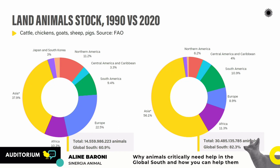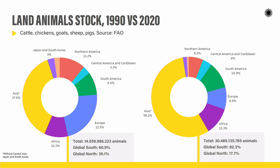Why are we discussing this today? Why is the Global South a point of concern for animal rights? This is a comparison — the source is the UN — between 1990 and 2020, showing the total number of animals: cattle, chickens, goats, sheep, and pigs. Unfortunately we cannot count aquatic animals because they don't even count as individuals.